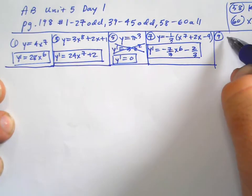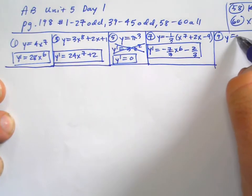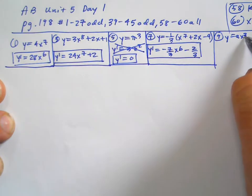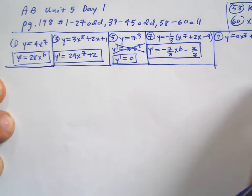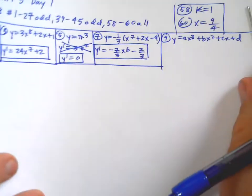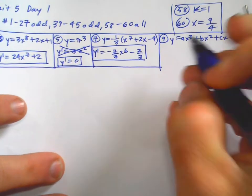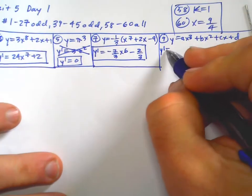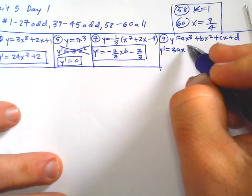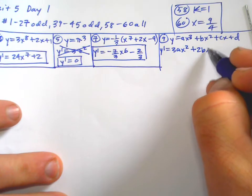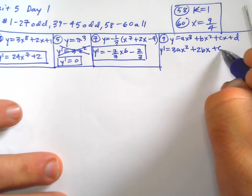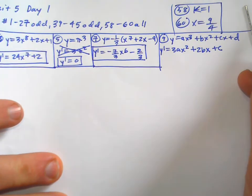Number nine: y equals Ax cubed plus Bx squared plus Cx plus D, where A, B, C, and D are constants — they're just numbers. So y prime equals 3Ax squared plus 2Bx plus C. D is just a number, so its derivative is 0.